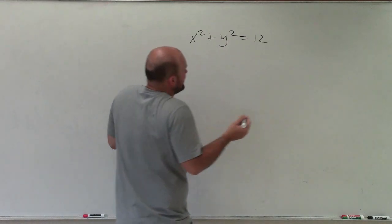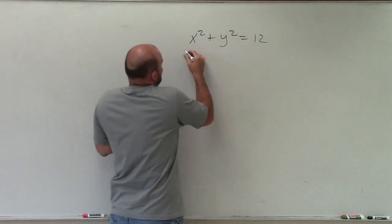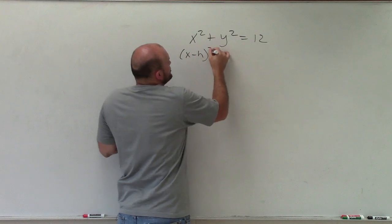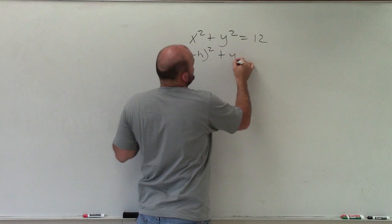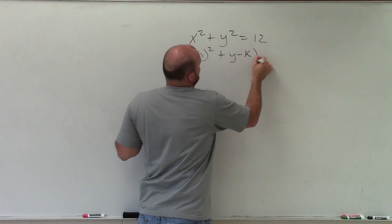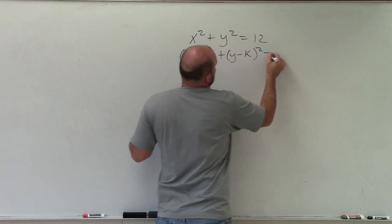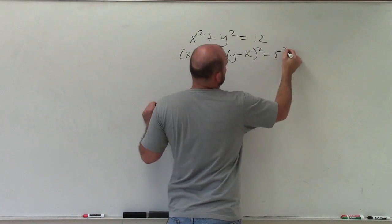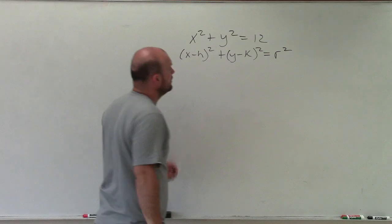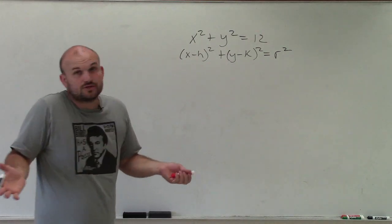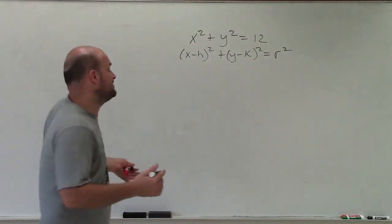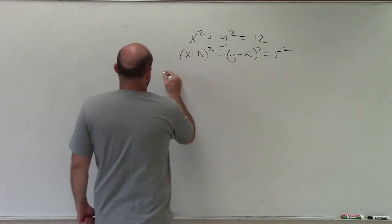Which you could also probably just identify and say, yeah, that's an equation of a circle, because the general form of the equation of a circle looks like this — r squared. So to graph this, all I simply need to do is identify the center and the radius.